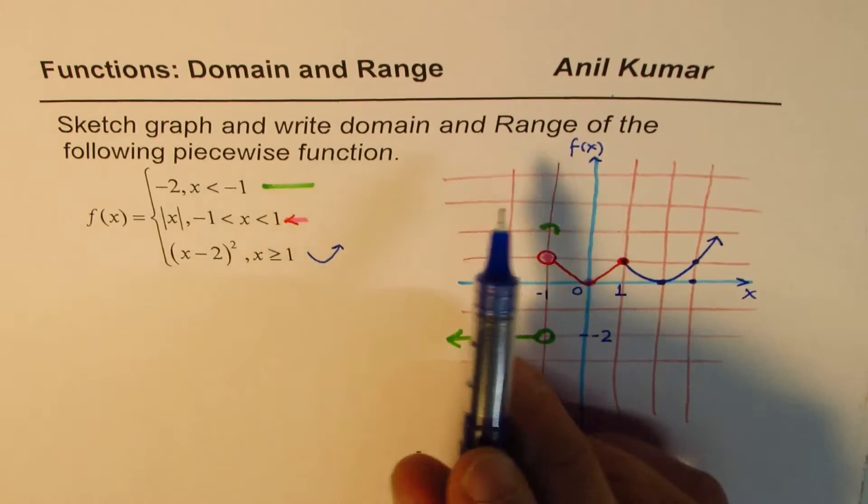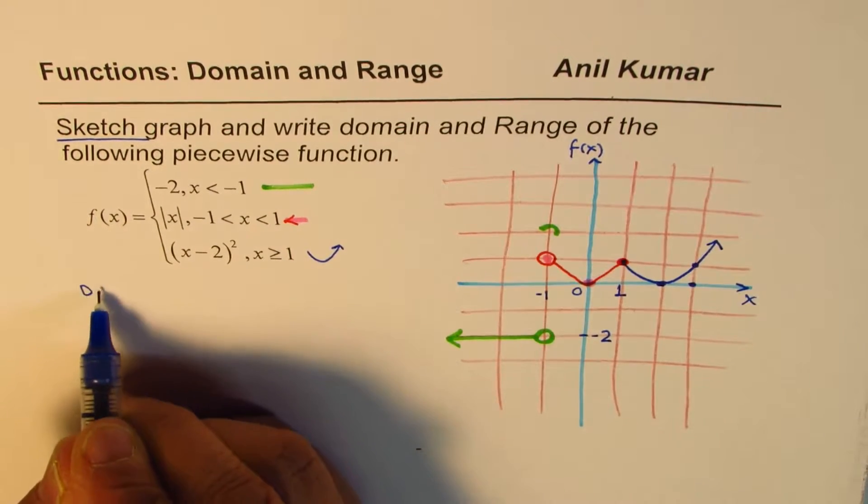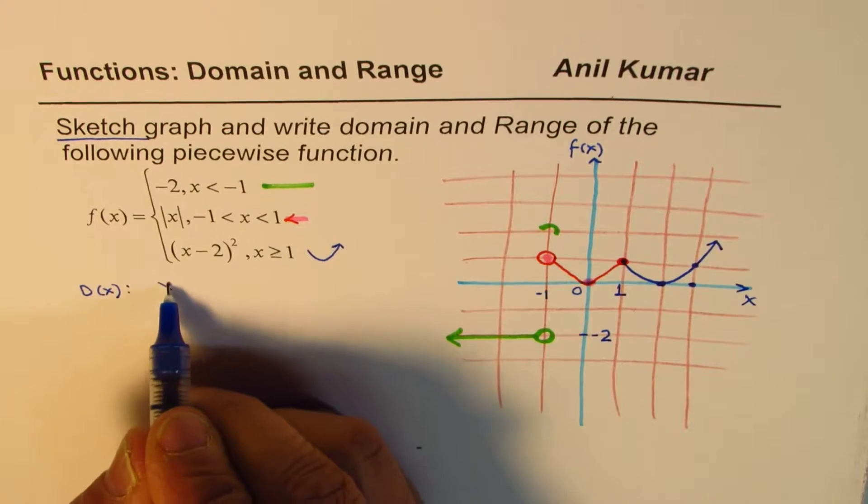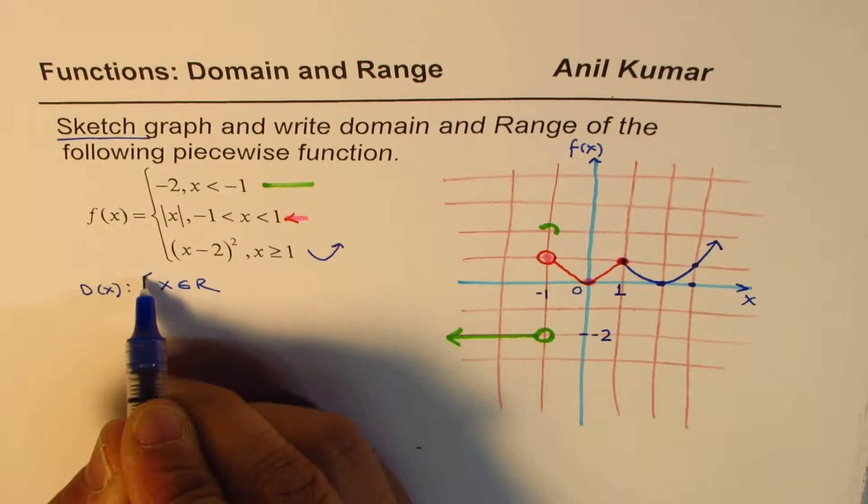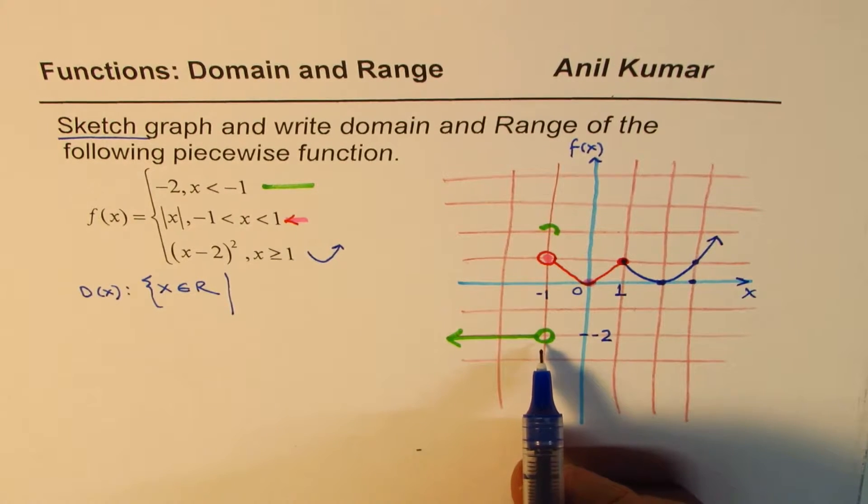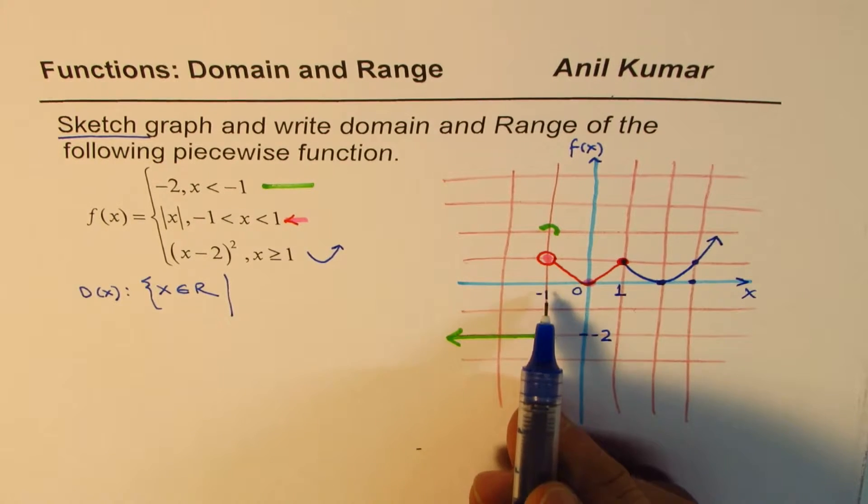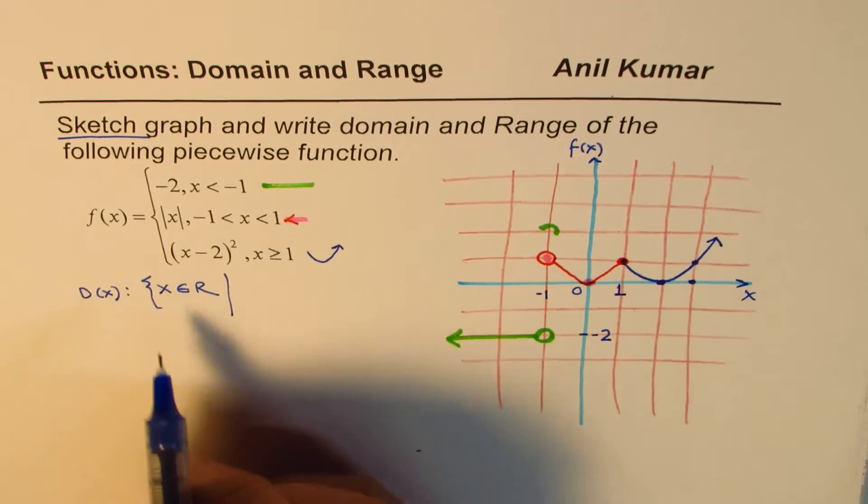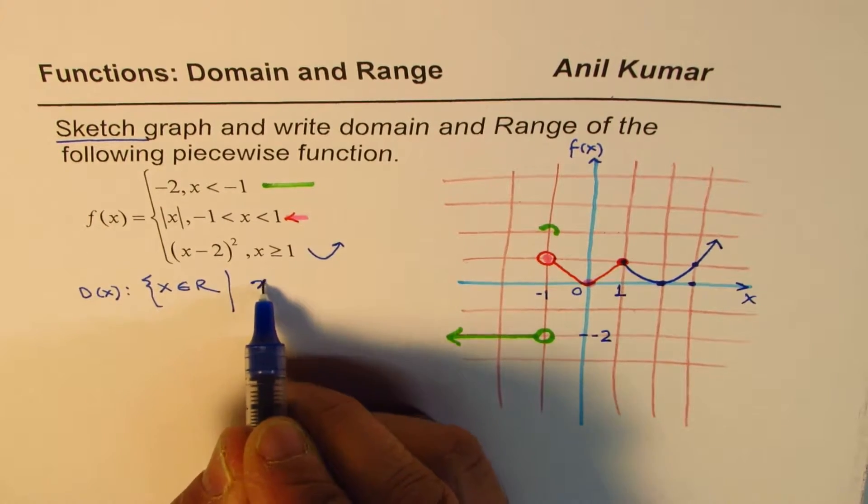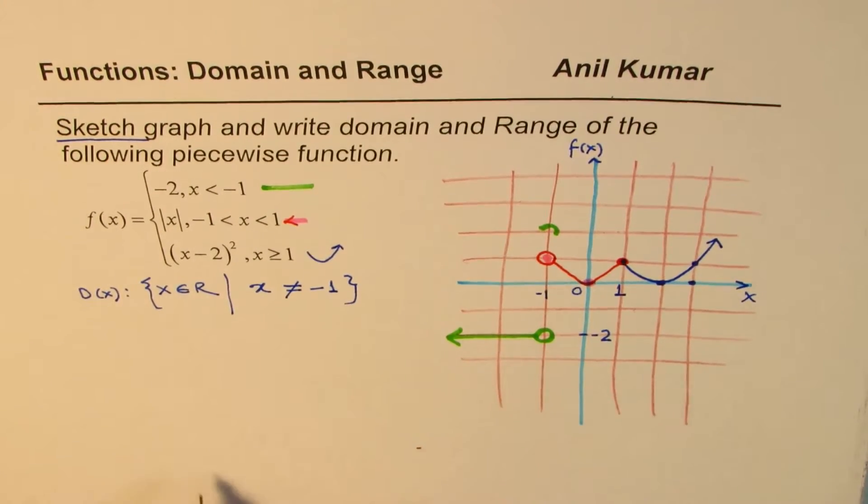Now let's write down the domain and range of this function. We have done the first part of sketching the graph, domain of this function. So domain of the function is x belongs to real numbers, and now from where to where. So here in this part, you see that it is from minus infinity to minus 1. Minus 1 is not in the domain. But after that, all the points are in domain. So we can say x belongs to real number where x is not equal to minus 1. So that gives you the domain of this function.